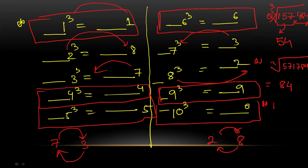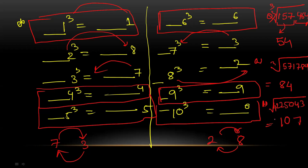Cube root of 1,225,043 — wait, let's take 1,225,043. The first group is 1,225. Eleven cubed is 1331, ten cubed is 1000 — nearest lower is 10, so first digit is 10... actually rechecking: the answer given is 107. Unit digit three means cube root ends in seven. So answer is 107.